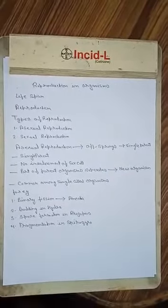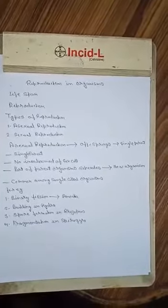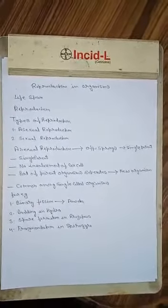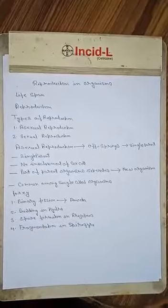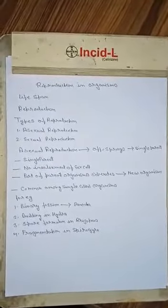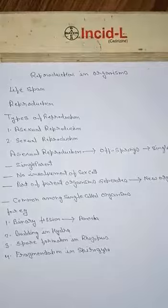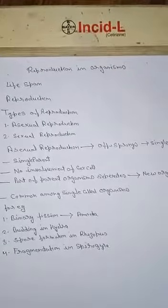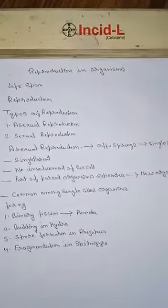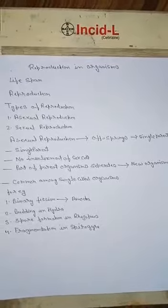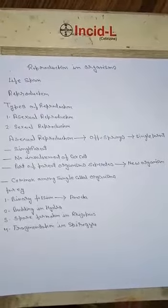In asexual reproduction, there is no need of two parents. Only a single parent is required. There is no involvement of sex cells. Part of the parent organism separates and gives rise to new organisms. This is common among single-celled organisms. For example, binary fission in amoeba.